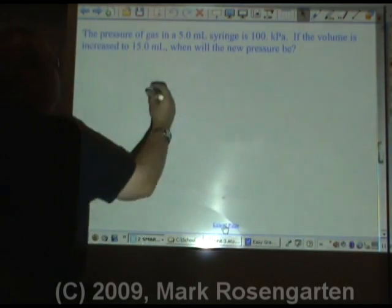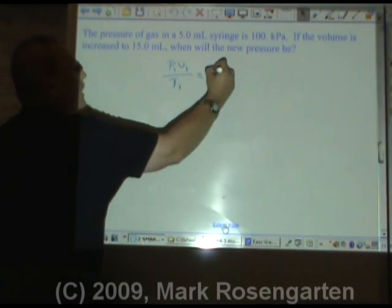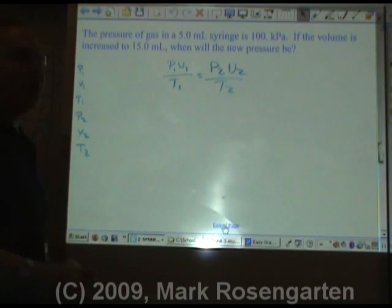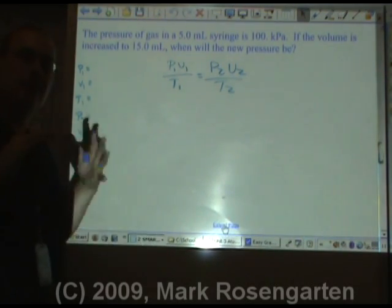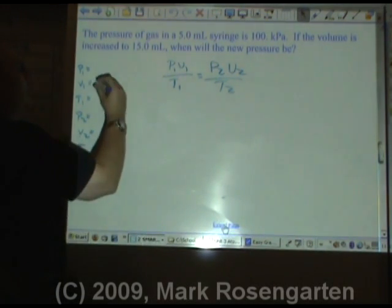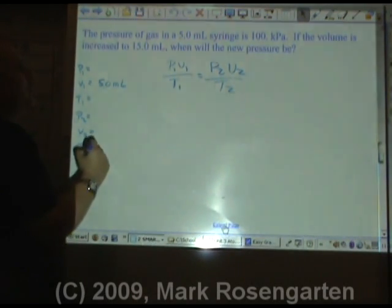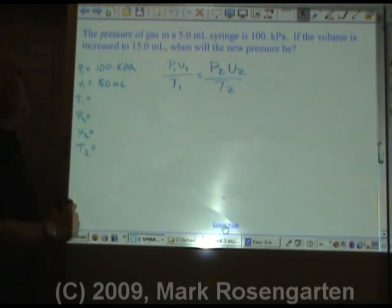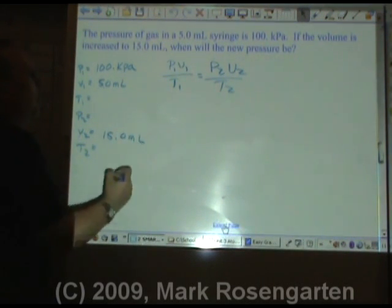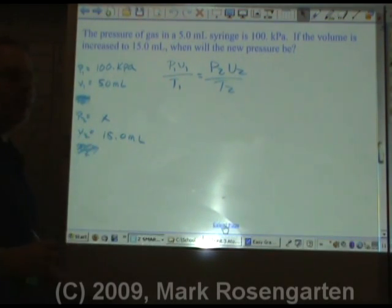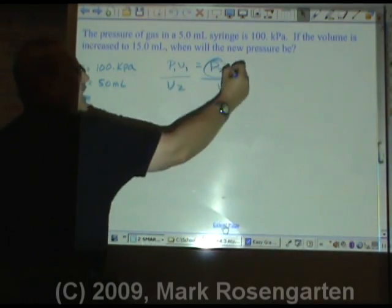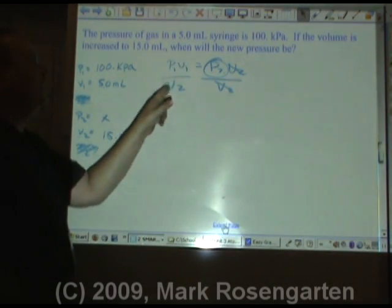Same thing goes for the next problem. First thing you need to do is write down the equation: P1V1 over T1 equals P2V2 over T2. Then make a data table. Don't ever say you don't know where to start, because you start every single problem the same way — every one is done exactly the same way. The pressure of a 5.0 milliliter sample in the syringe is 100 kilopascals. If the volume is increased to 15.0 milliliters, what will the new pressure be? Temperature remains constant, so we don't need it. We're trying to solve for pressure 2, so we divide both sides by volume 2 to get it out of there.